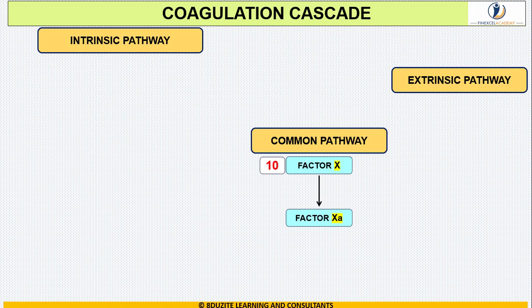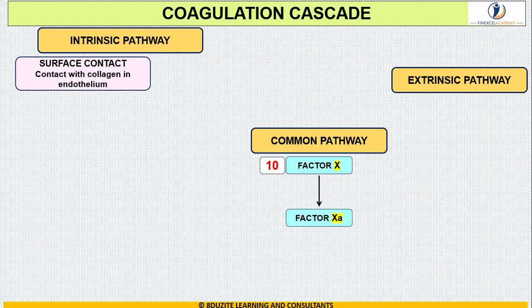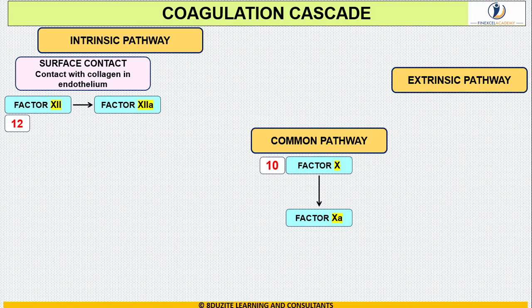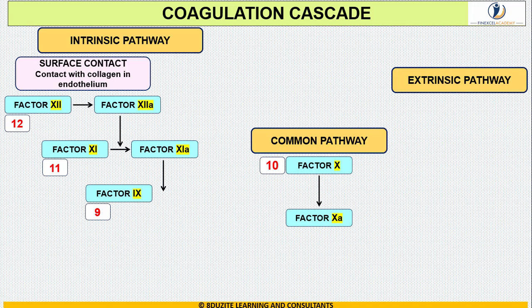Beginning with the intrinsic pathway: 'intrinsic' means inside, so in this pathway there is injury to the blood vessel and collagen is exposed to the circulating clotting factors. The blood vessel is not widely broken and there is no tissue damage. Once contact with collagen occurs, Factor 12 gets activated to Factor 12a; Factor 12a activates Factor 11 to Factor 11a; Factor 11a activates Factor 9 to Factor 9a; and finally Factor 9a converges on the common pathway and activates Factor 10 to Factor 10a.